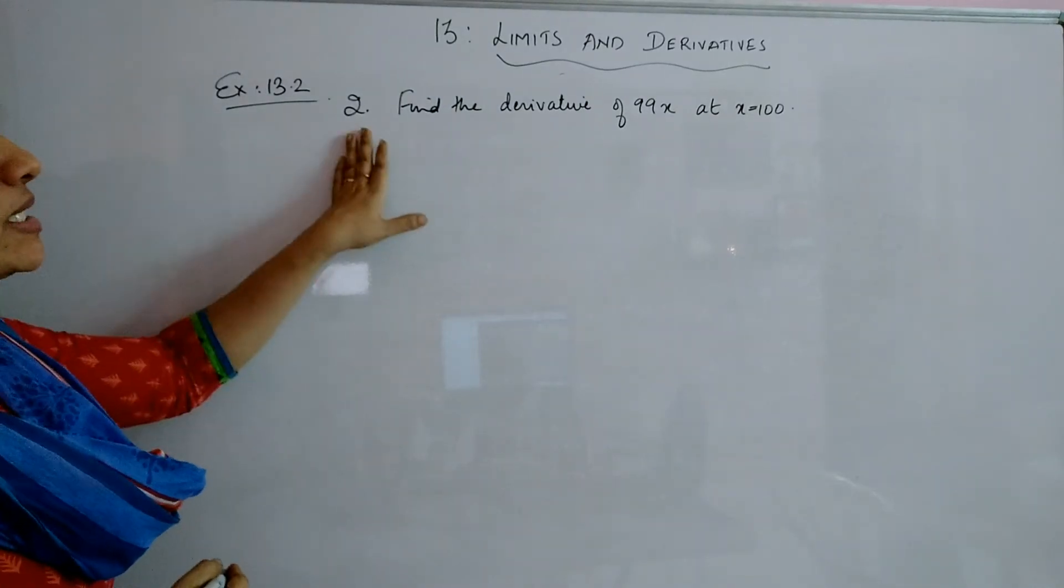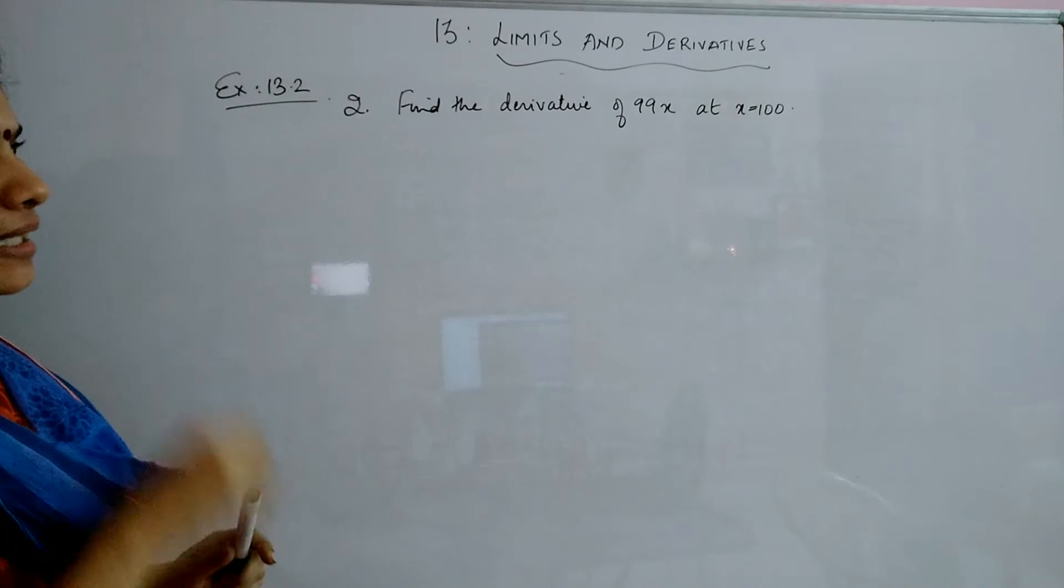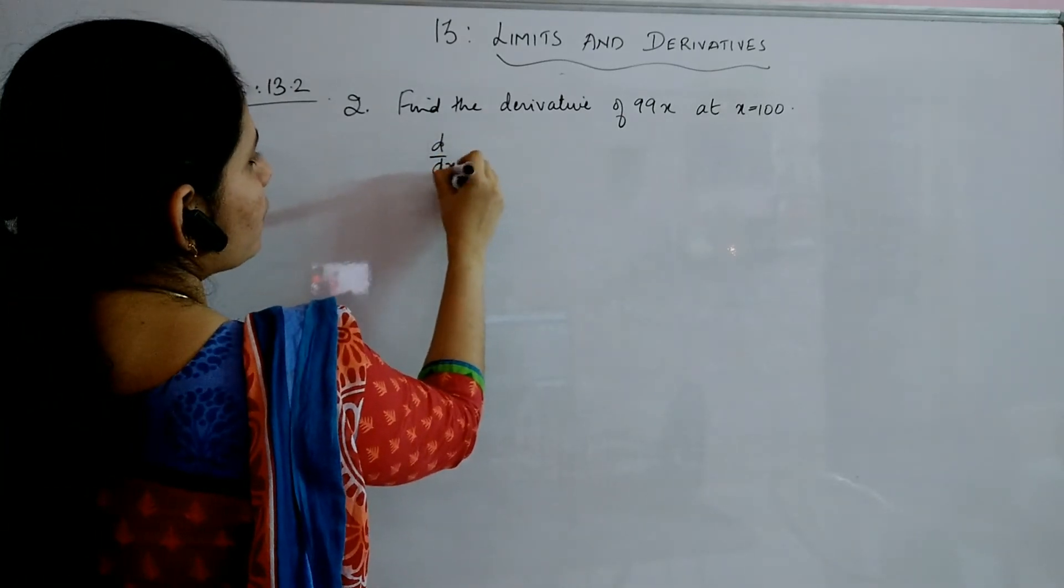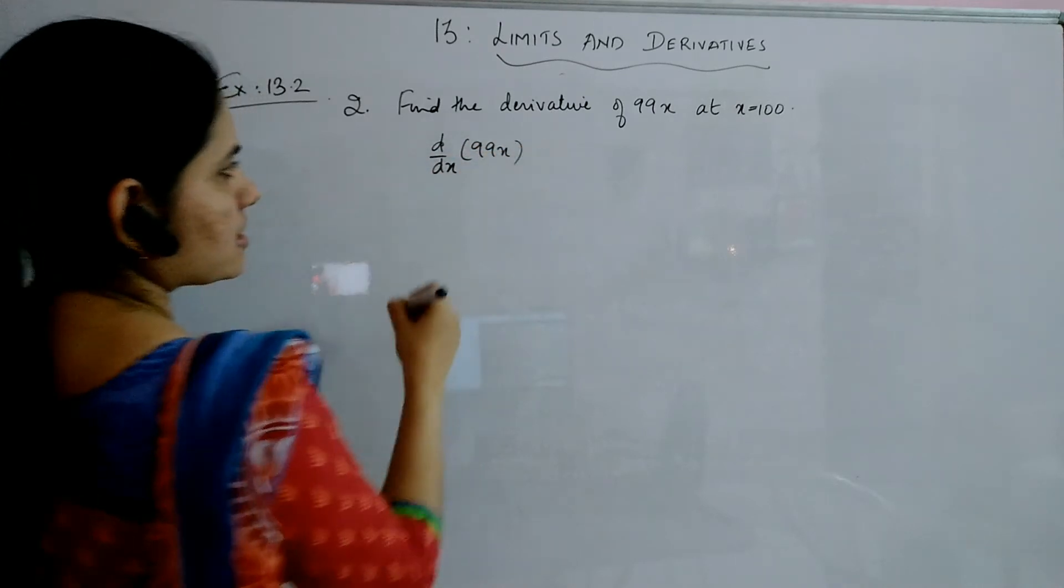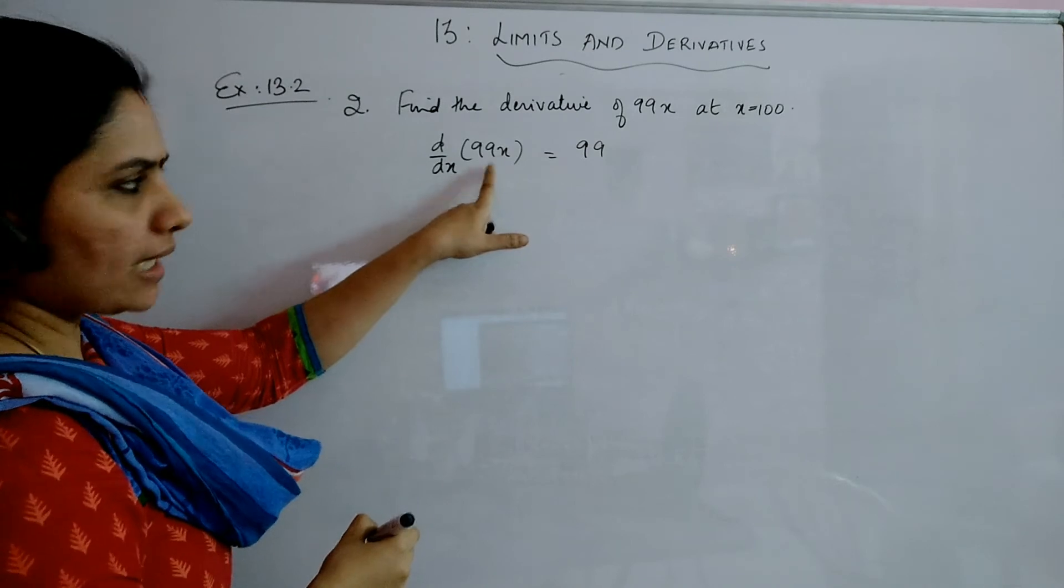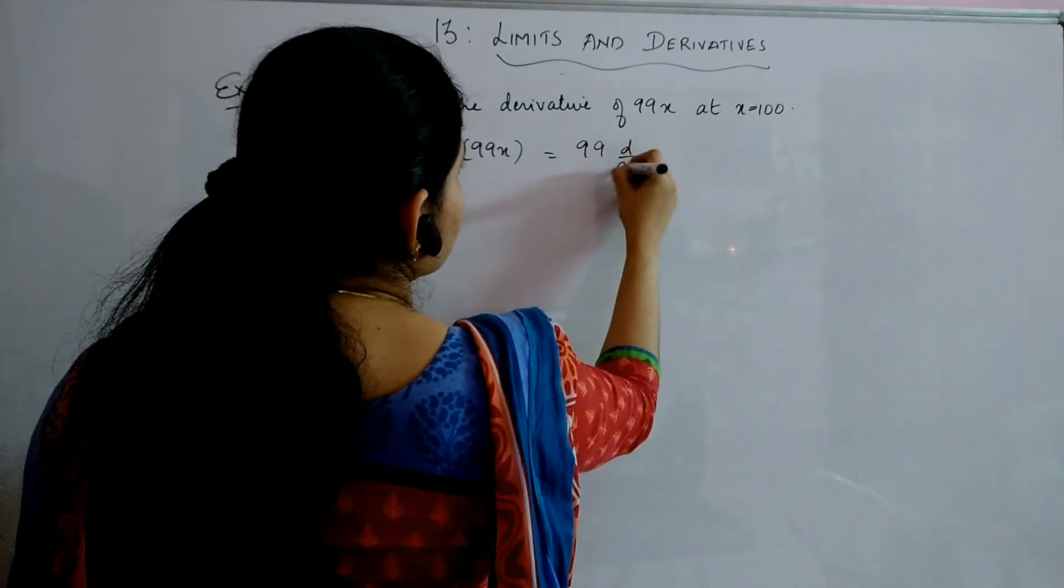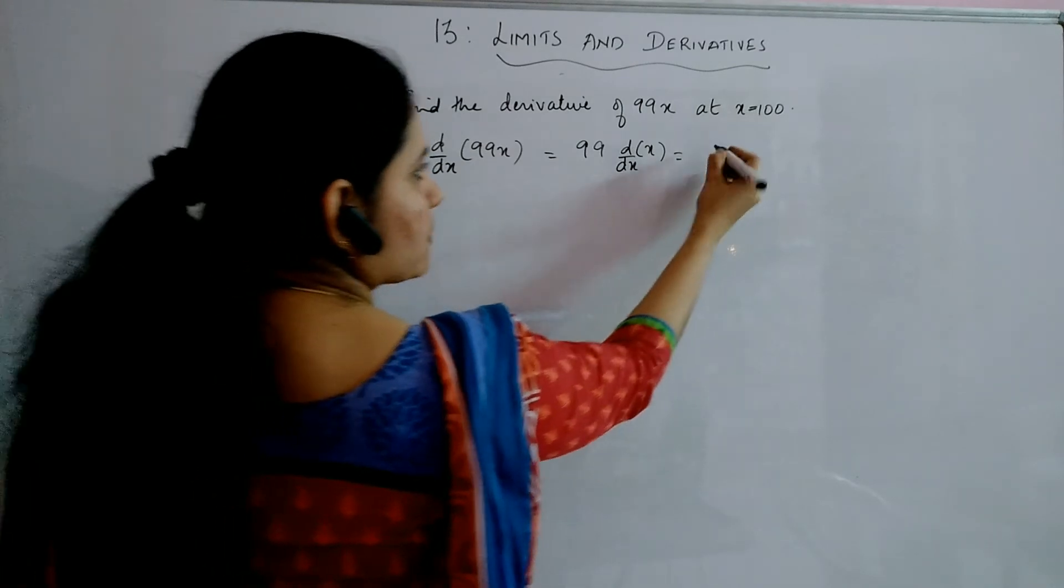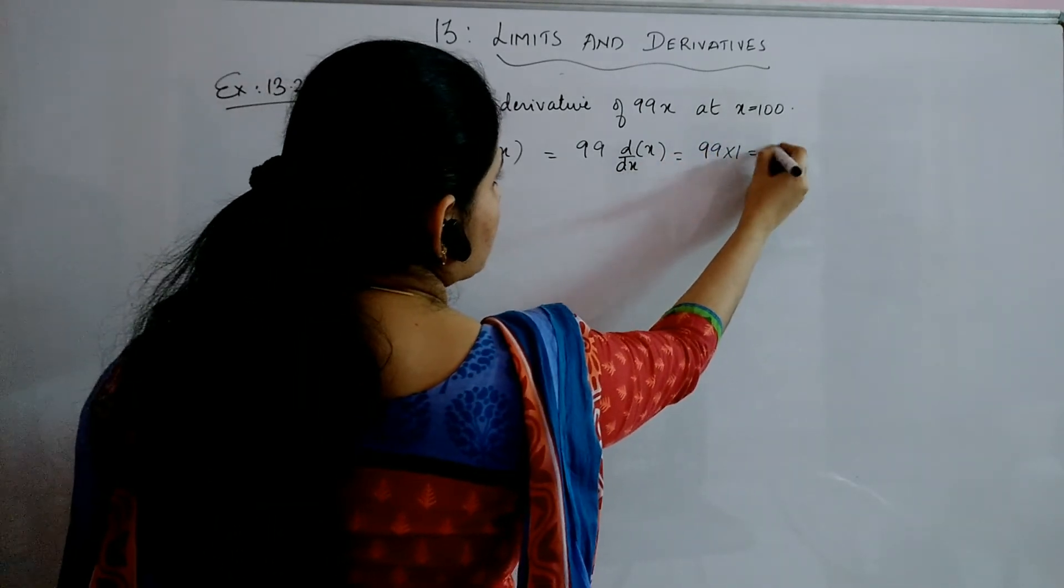Okay, so the next question is find the derivative of 99x at x equal to 100. Again, d by dx of 99x is, you can take the constant out which is 99, 99 into d by dx of x, and derivative of x with respect to x will give you 1. So it is 99.